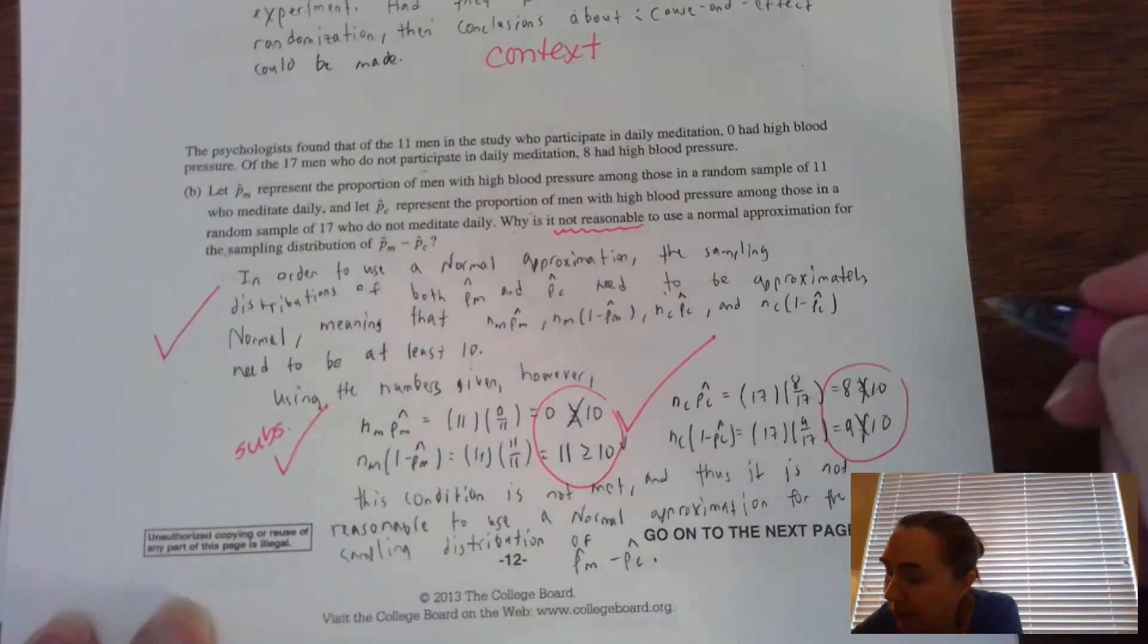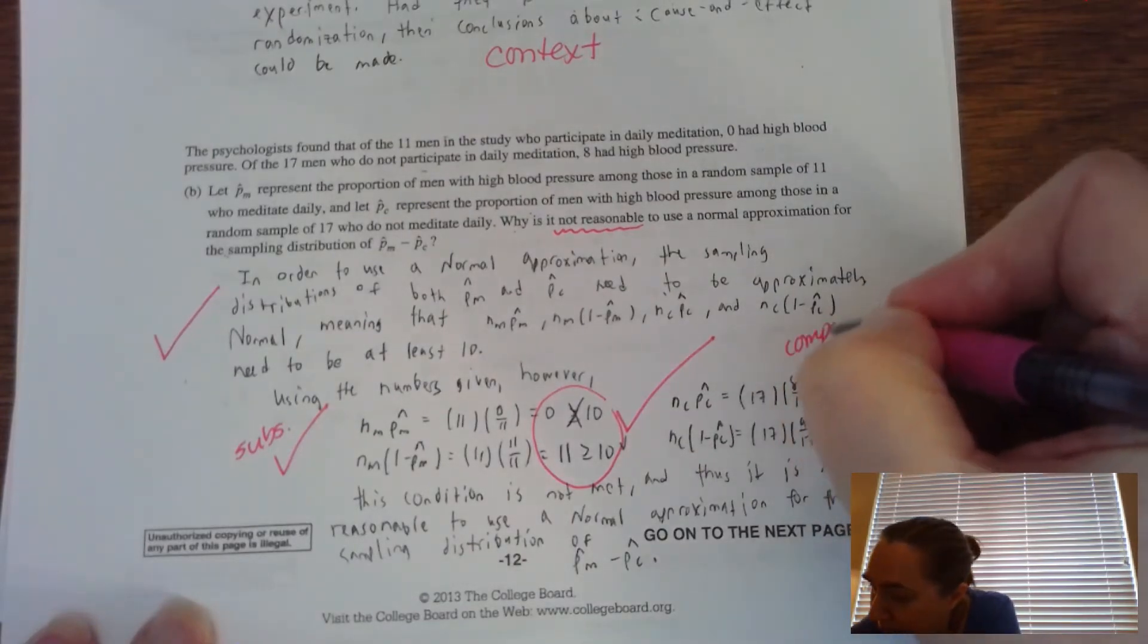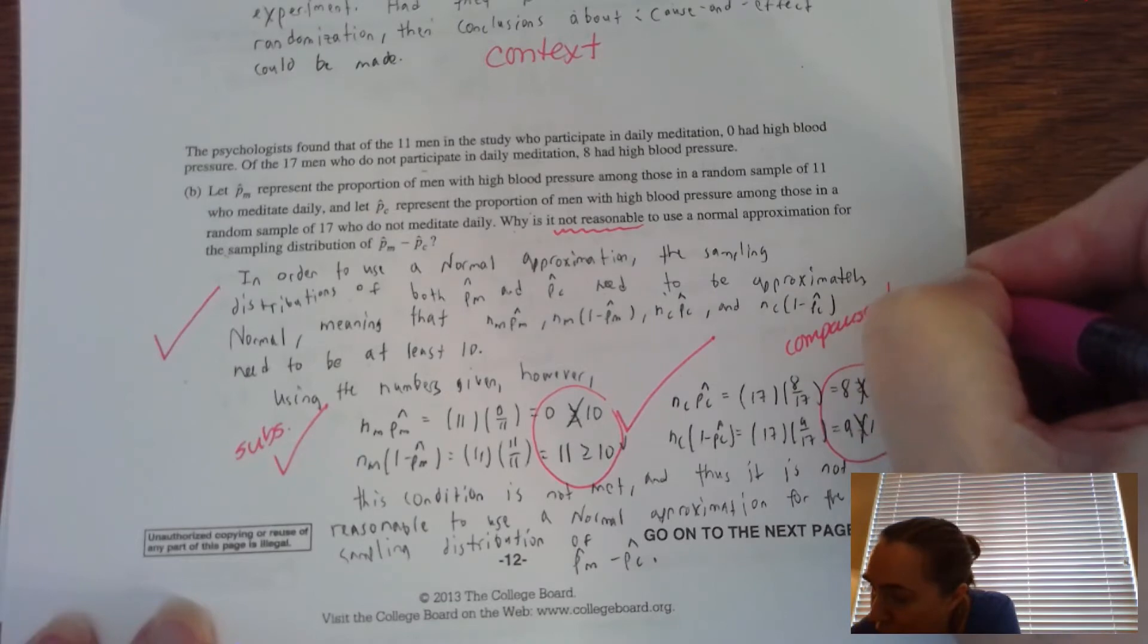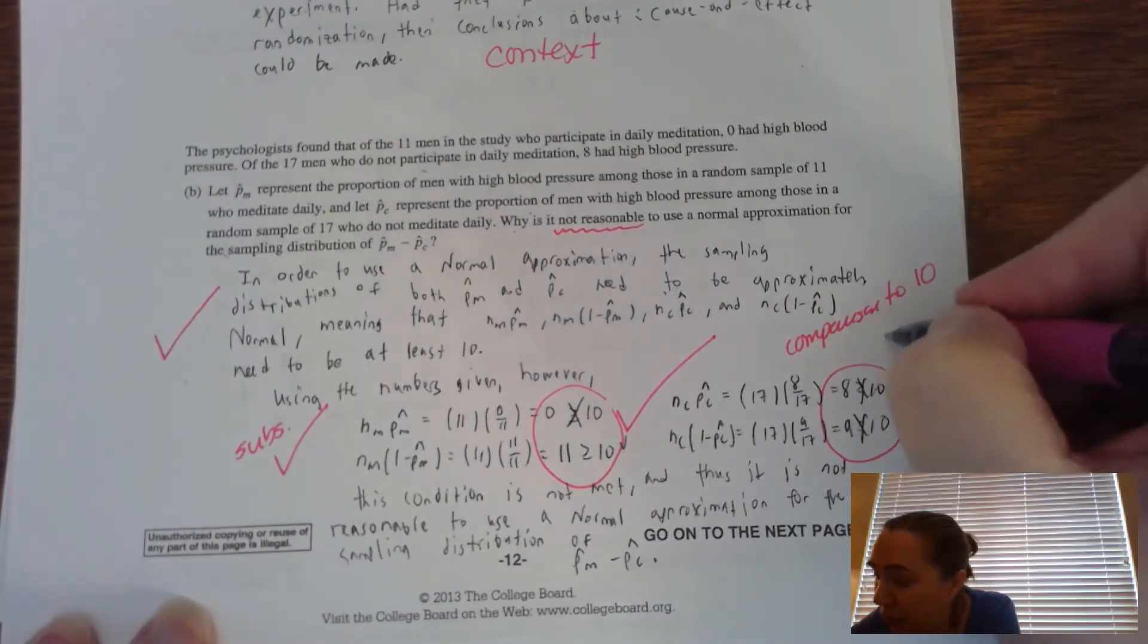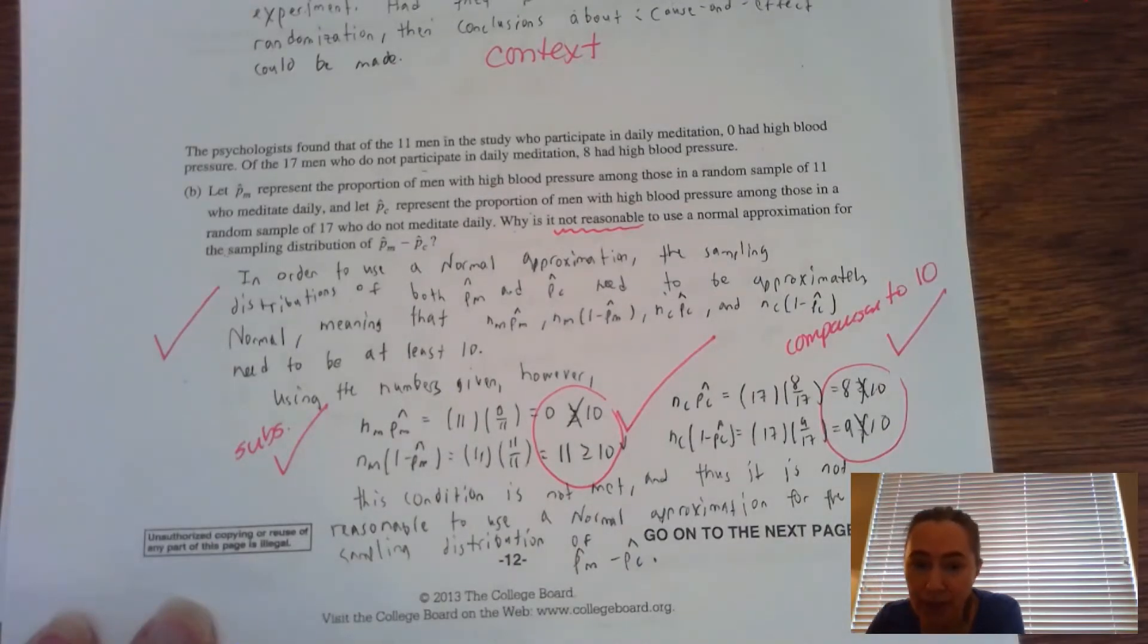So there has to be a comparison to 10 and some kind of indicator that it did not work. This person did it just fine. They have all their comparisons to 10. So there are four checks for this particular problem.